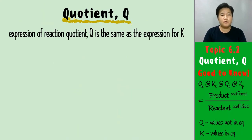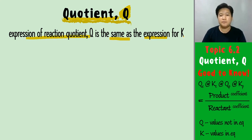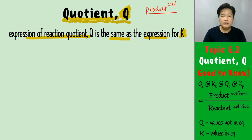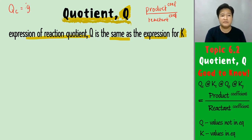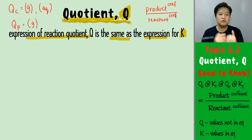First and foremost, the expression for Q is the same as writing the expression for K. We still have products to the power of their coefficients over reactants to the power of their coefficients. For Qc, we count gas and aqueous species; for Qp, we count only gases — the same rules that apply to Kc and Kp.